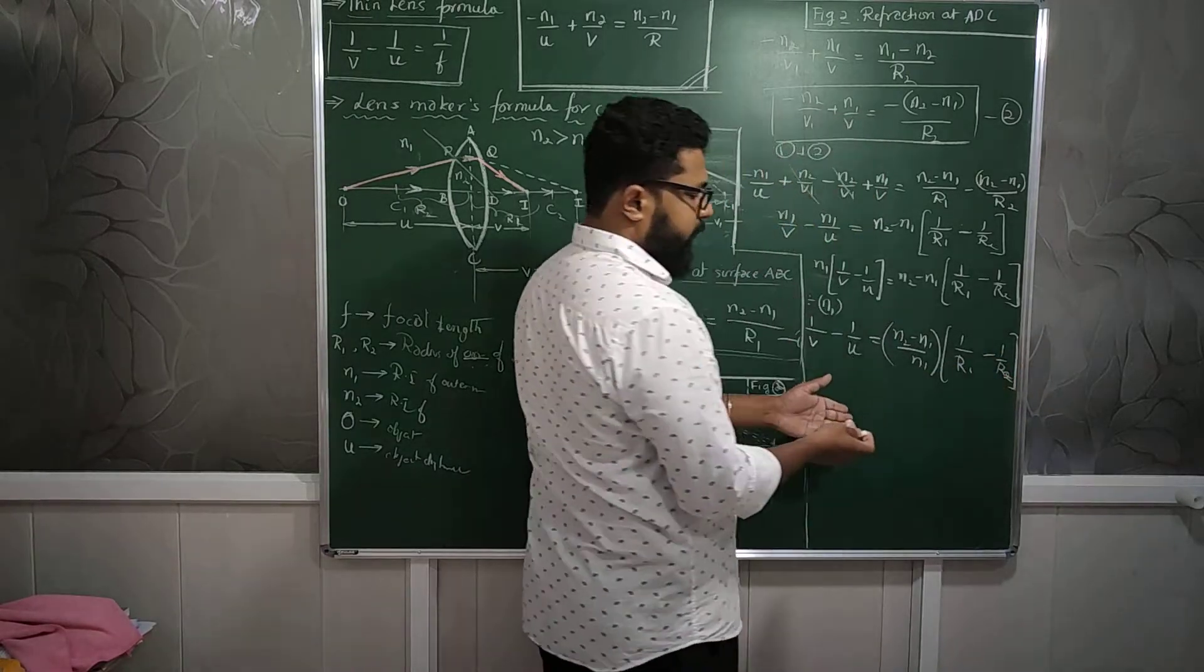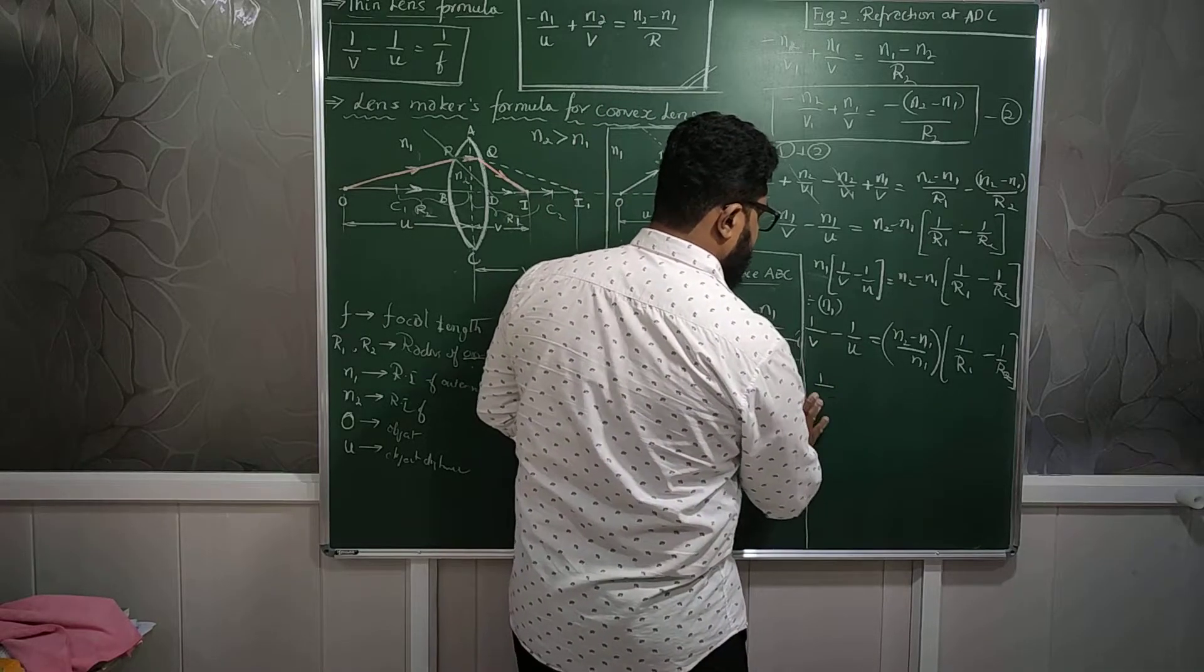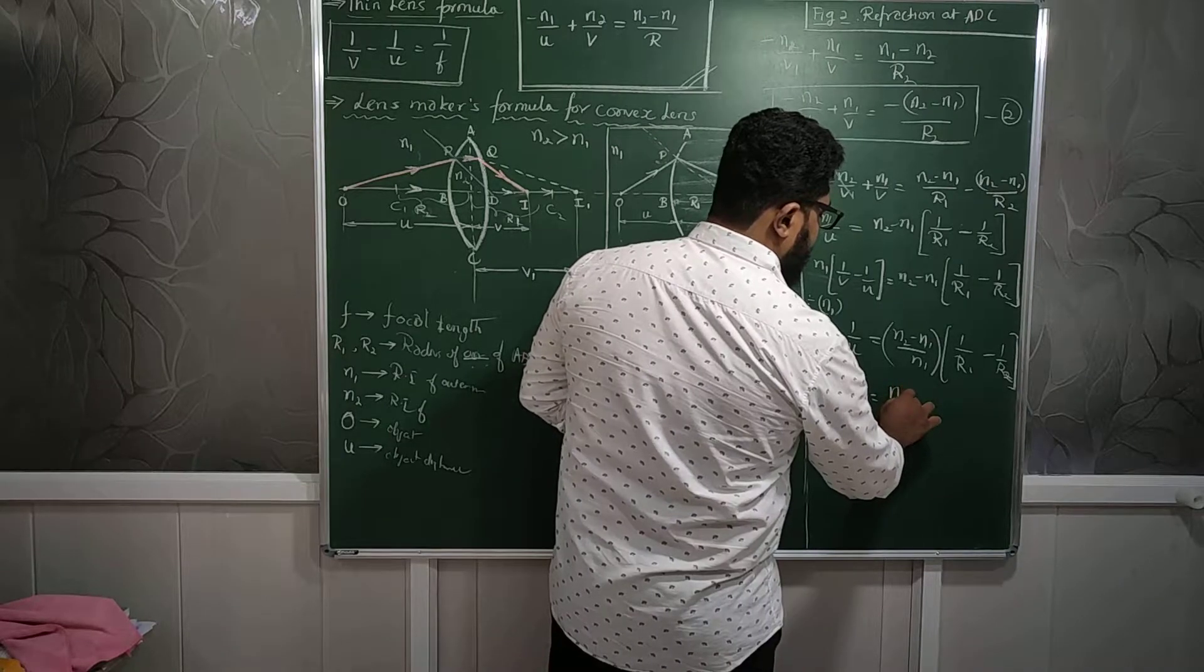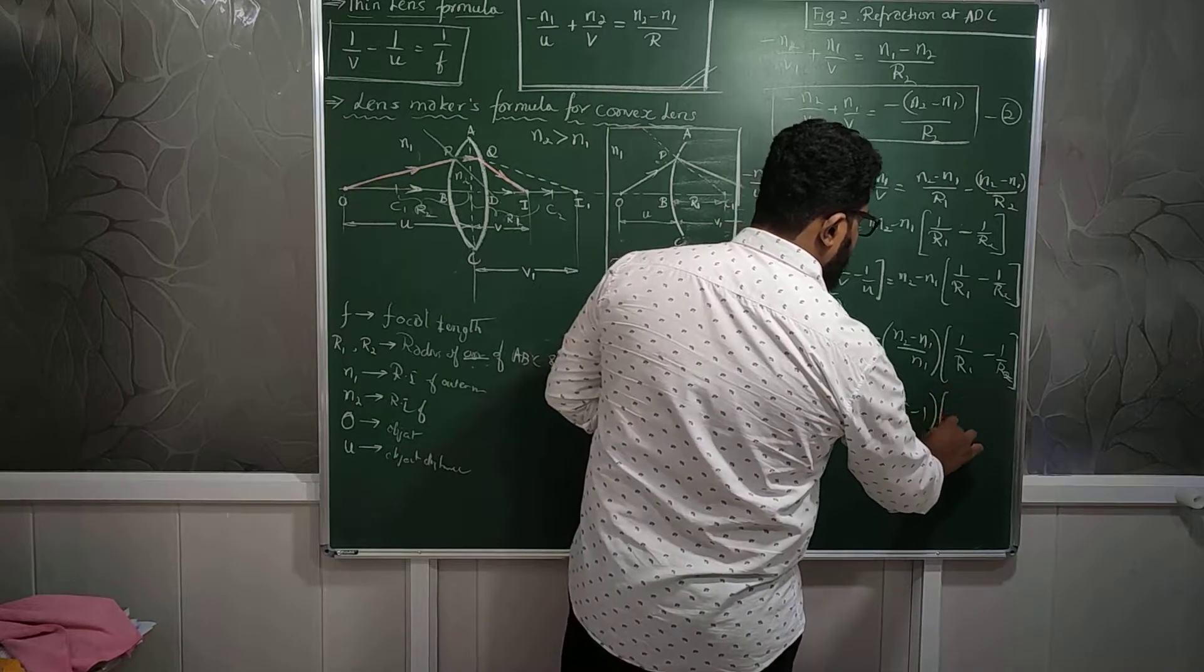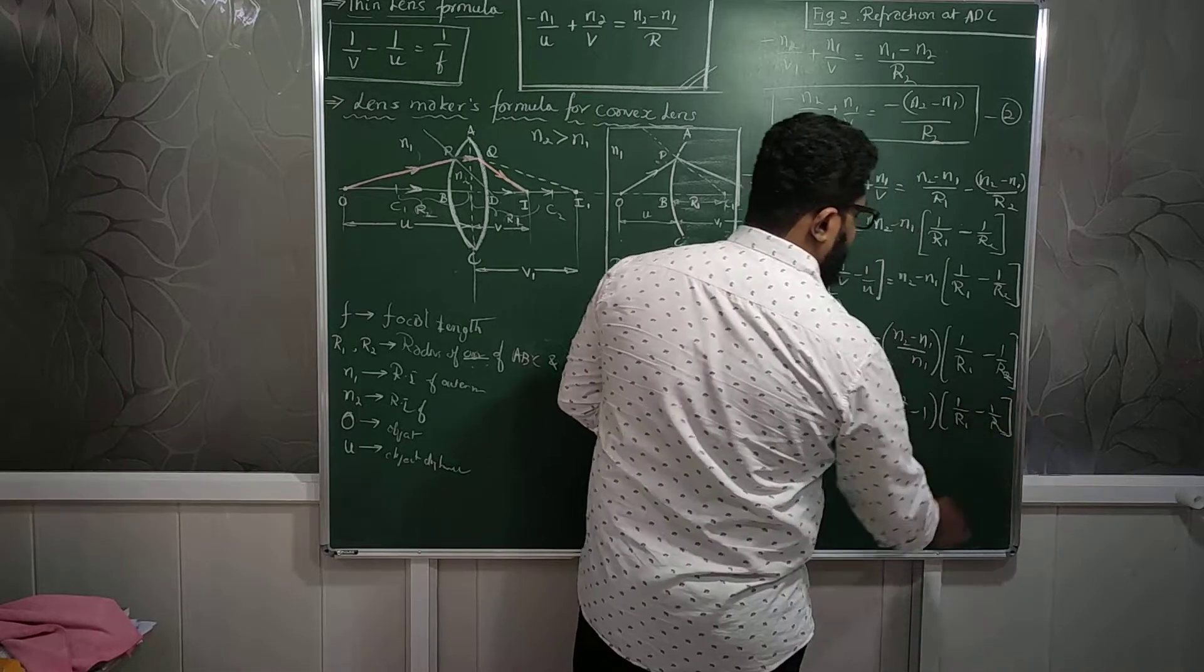And only thing will be 1 by V minus 1 by U is equal to N2 by N1 minus 1 into 1 by R1 minus 1 by R2. This is also an equation. You can stop it at that or I can continue it further and write it like this.